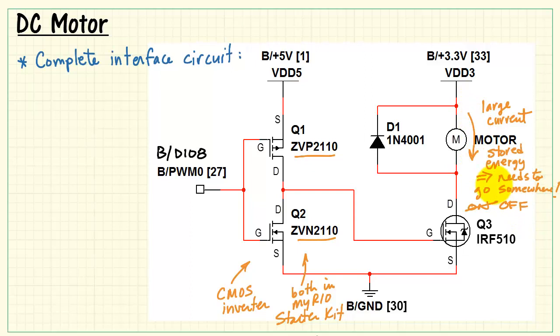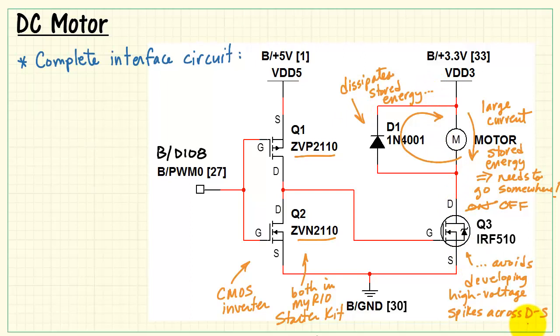So the diode becomes forward biased at that point and dissipates all of the stored energy inside the motor.